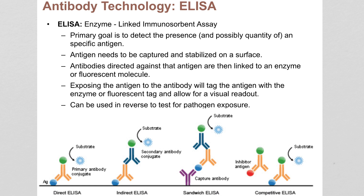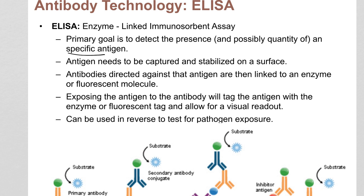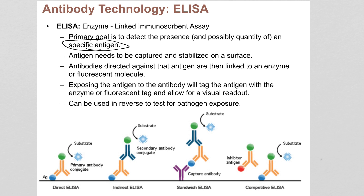ELISA, the first one — enzyme-linked immunoabsorbent assay — sounds pretty fancy, but it's not as bad as it looks. The idea is you use ELISA to detect the presence of a specific antigen in a sample. A good example is blood or plasma. If you want to know if someone has a certain infection, or what their blood type is, all of those things are detecting a particular antigen. You can even use it to measure certain hormones like insulin — anything that can bind to an antibody. These antigens are way too small to see even with the most powerful microscope, so it's difficult to measure the quantity of them in solution.